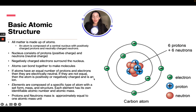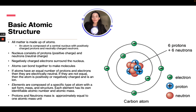Atoms can bond together to make molecules. Carbon can bond with different atoms, whether it's oxygen, hydrogen, or other elements, and different structures of atoms make up molecules. If atoms have an equal number of protons and electrons, then they're electrically neutral. If they're not equal, then the atom is positively or negatively charged and is called an ion.